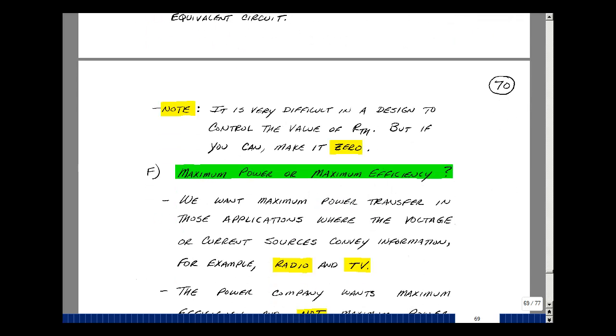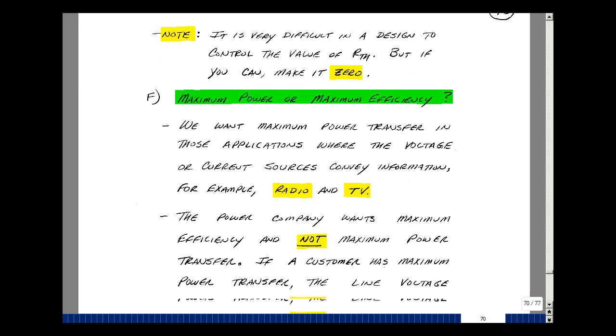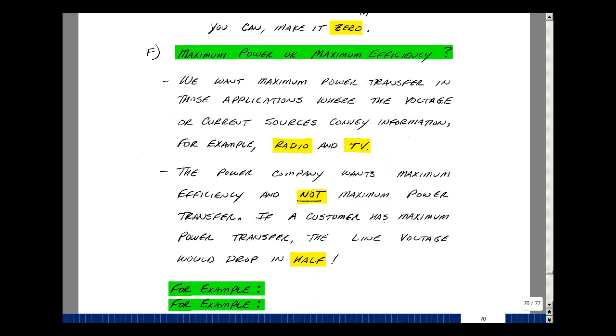Now are there cases where you would want maximum power transfer but not maximum efficiency and vice versa? And the answer is yes. We want to maximize power transfer in those applications where voltage or current is conveying information. This would be wireless radio and television. We're actually going to take a look at this idea in a later course, ECE 404, where we design what are called matching networks to get the most power from an antenna or into an antenna.